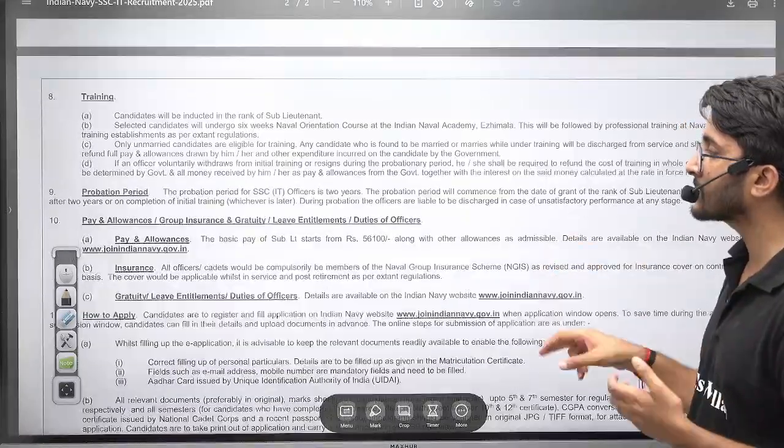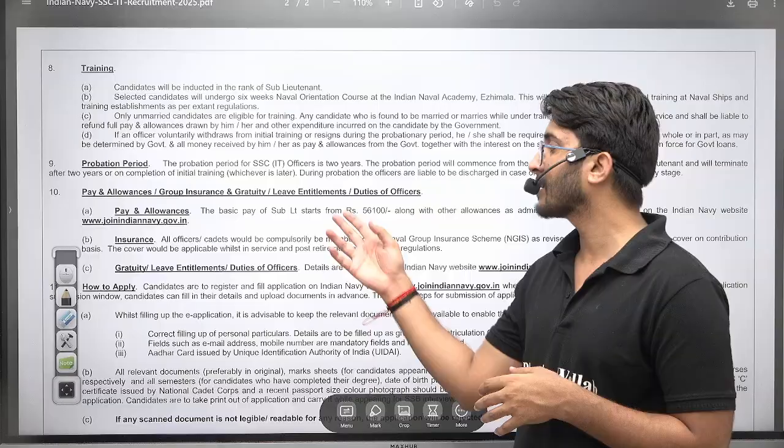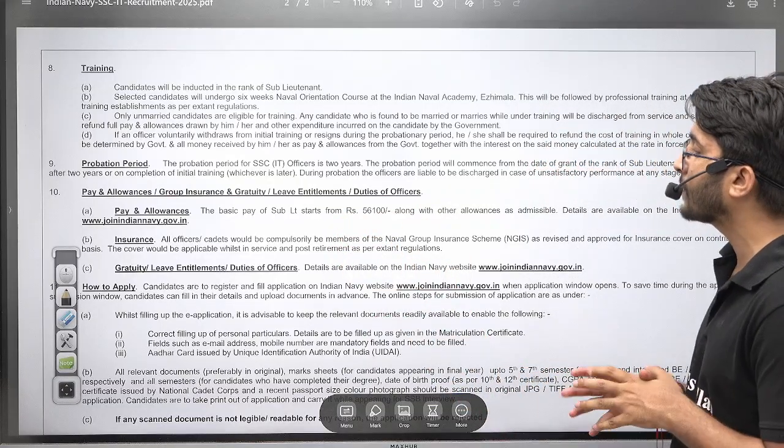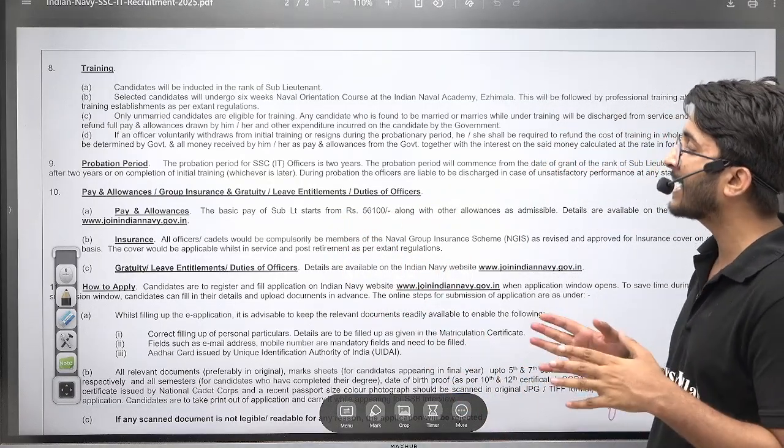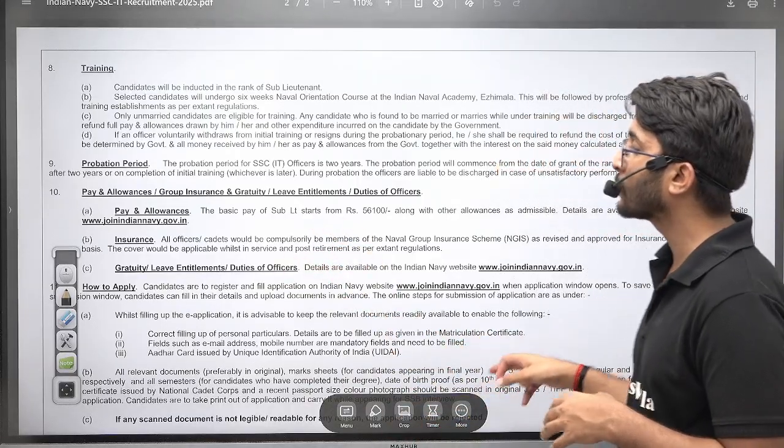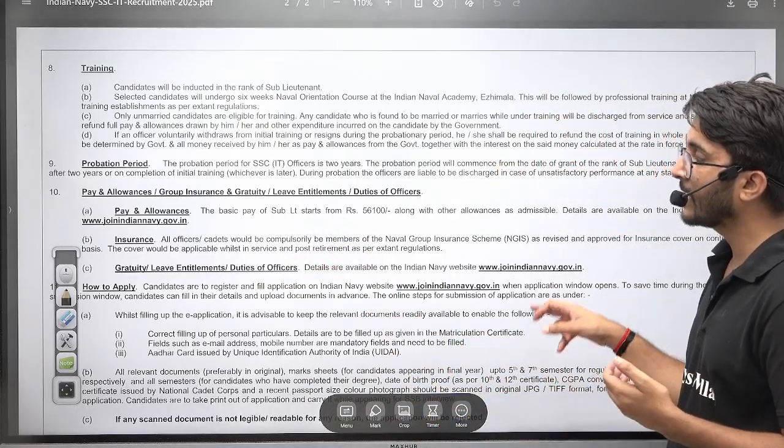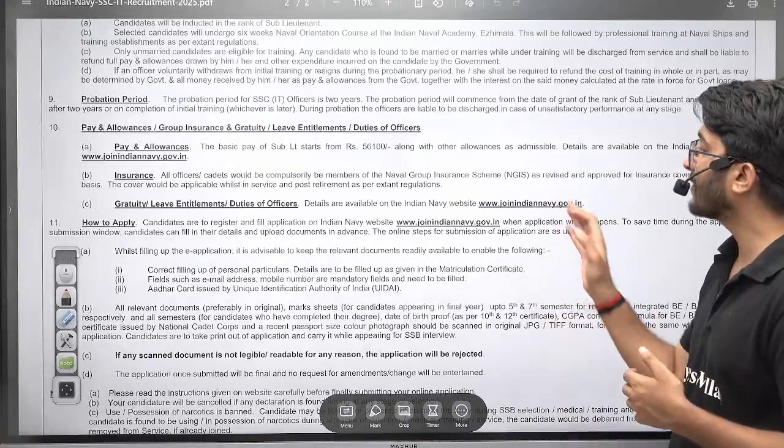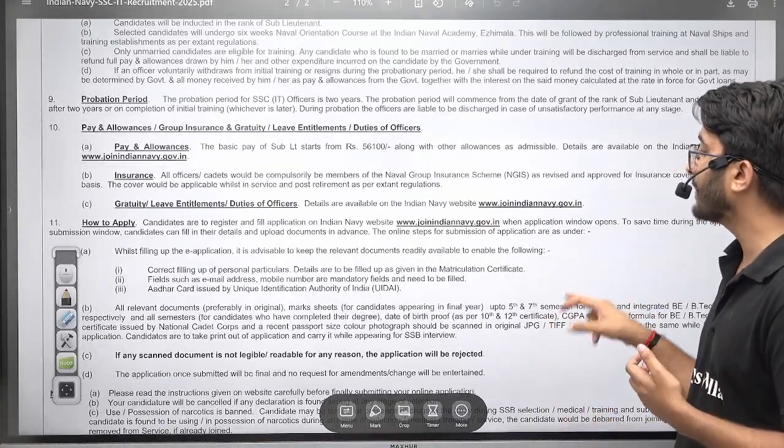If you are able to shortlist, then you will become a direct officer Sub Lieutenant and your salary is in the range of 56,100 to 1,77,500. You will also receive lots of allowances and benefits. The pay and allowances are also mentioned in Indian Navy official website, which is IndianNavy.government.in. You need to visit and apply.